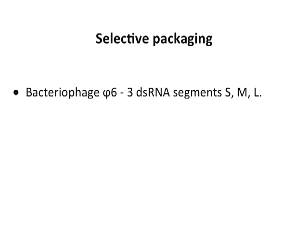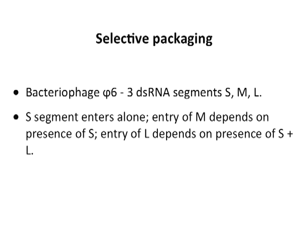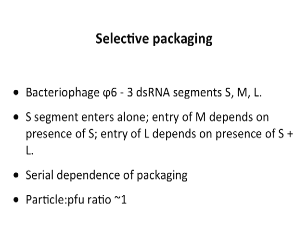There is an example of selective packaging in bacteriophage Phi6, which has three double-stranded RNA segments: S, M, and L. S goes in first into the capsid — you can't do anything else until S is there. Then M comes in only if S is present. Then L requires the presence of S plus M. This selective packaging mechanism means only one way to put the RNAs in. You would predict every particle is infectious, and in fact the particle-to-PFU ratio of this virus is one — it does a good job making infectious particles because of this serial dependence of packaging.